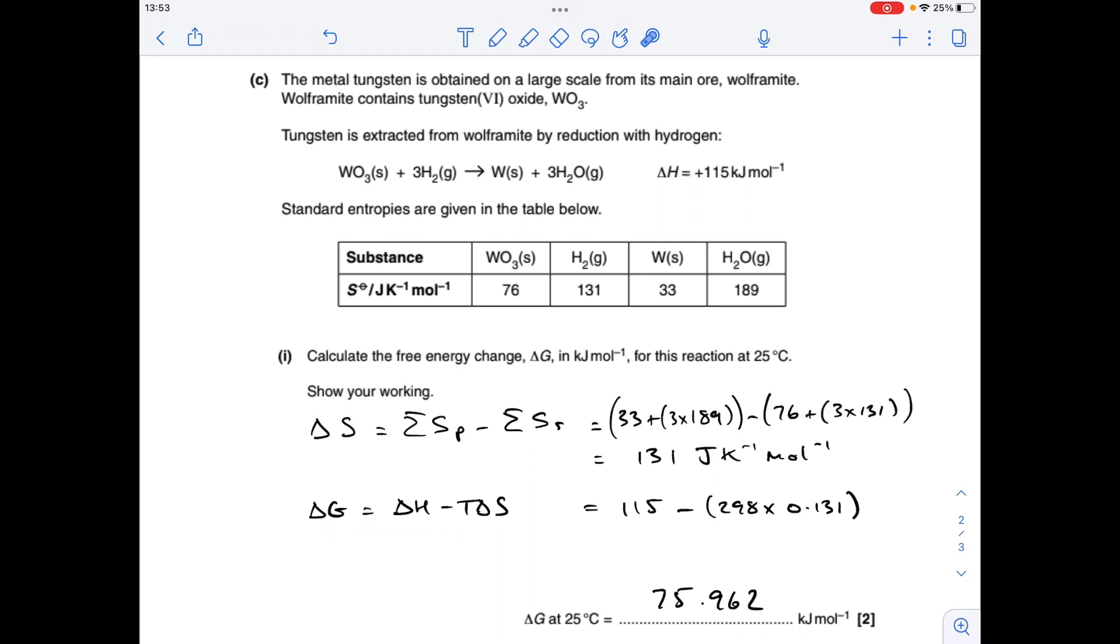So bringing in the Gibbs equation, just notice that the units that they want for delta G are kilojoules per mole. So we're going to keep the delta H in kilojoules per mole. Obviously temperature goes into Kelvin, but the entropy change needs to go from joules per kelvin per mole to kilojoules per kelvin per mole. So I've divided by 1,000 there, and that's what you get for delta G.